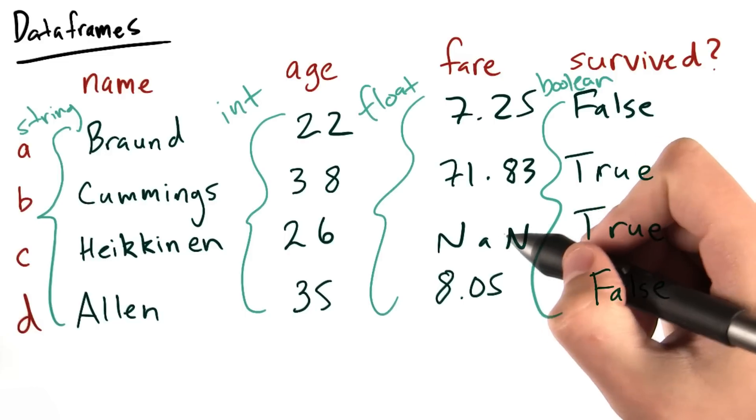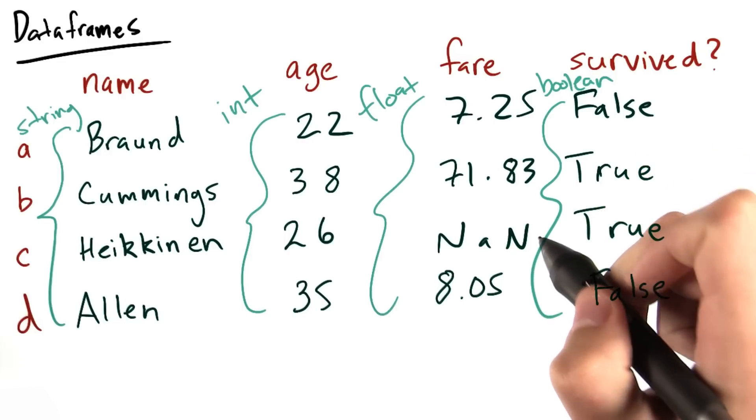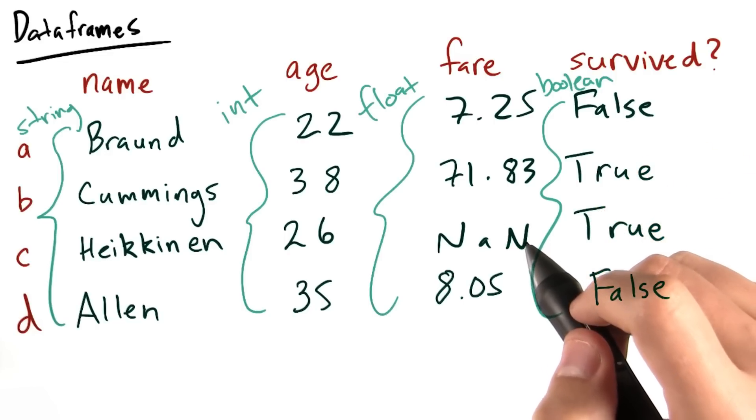There are also some not a number entries. This is what happens when we don't specify a value. How would we go about making this data frame?